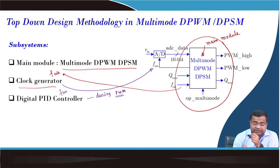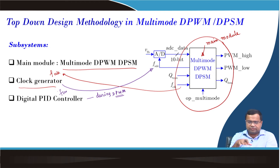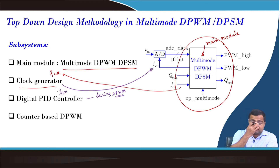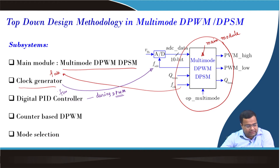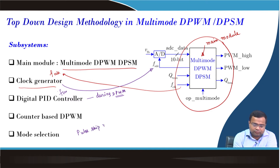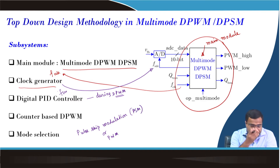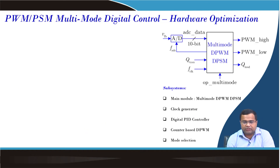We also need a digital PID controller during PWM. If digital PWM (DPWM) is activated, the digital PID controller is activated because we need a feedback controller. We are using a counter-based DPWM, and there is a mode selection to decide whether to go for PSM or PWM. We need this module and we want to optimize the hardware.